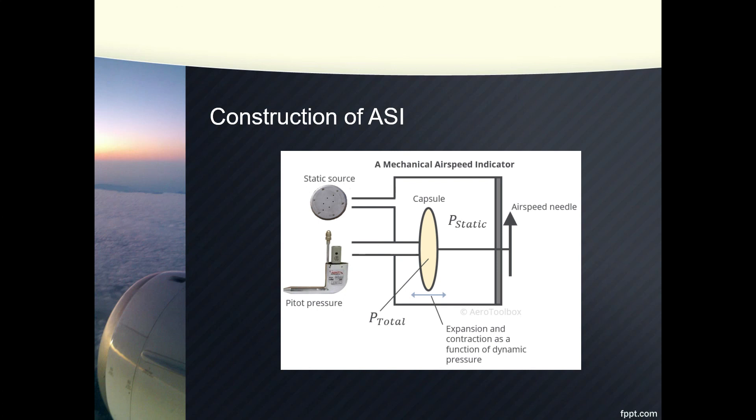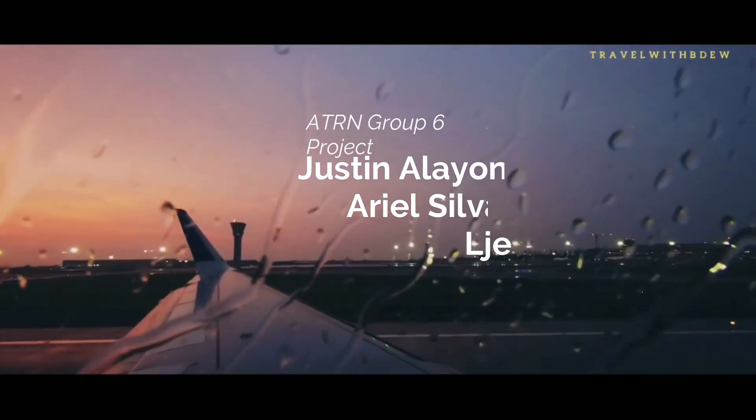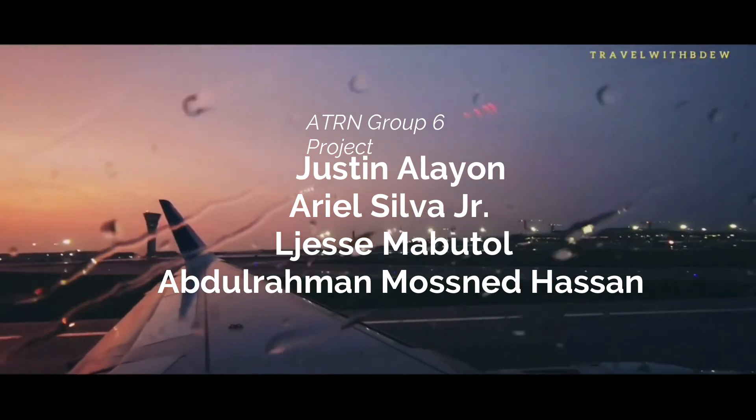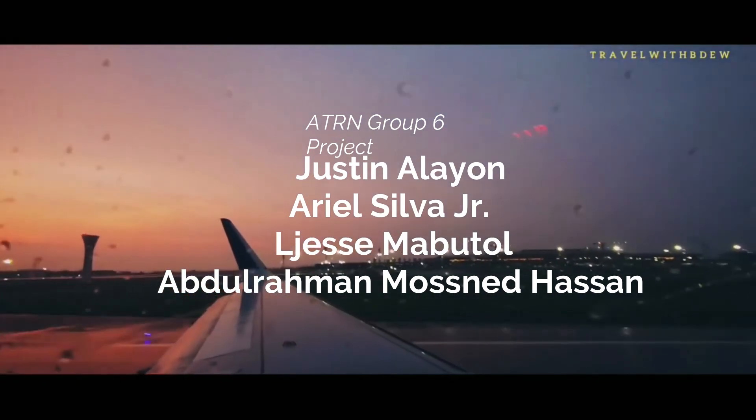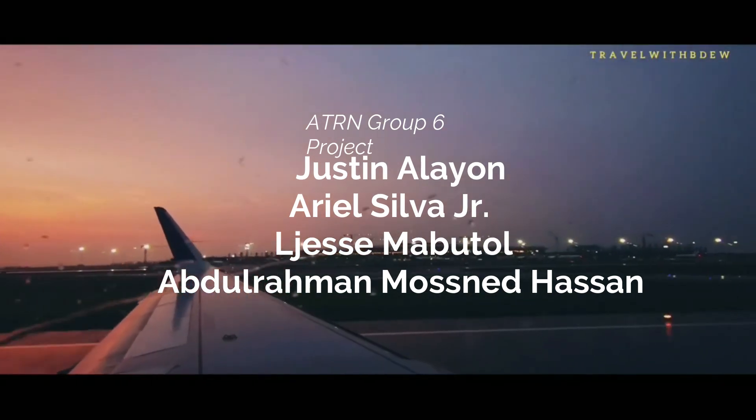A mechanical linkage from the capsule to the instrument face displays this changing dynamic pressure as an airspeed on the dial. The airspeed indicator must be calibrated in order to fix the relationship between the dynamic pressure and the resulting velocity. This calibration is performed at sea level conditions representing a standard day.